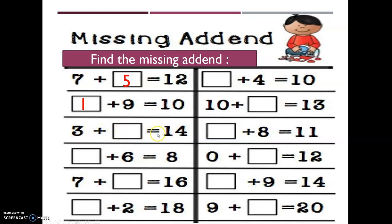Three plus what gives you fourteen? This is plus: baby plus baby equals mommy. Baby three is here, the other baby is missing, and mommy is fourteen. We will move baby three on our fingers: after three — four, five, six, seven, eight, nine, ten, eleven, twelve, thirteen, fourteen. After finishing ten fingers, another one makes eleven. Also: what plus six gives you eight? And seven plus what gives you sixteen? Move it on your fingers to reach mommy sixteen — the answer is nine.